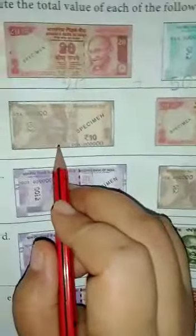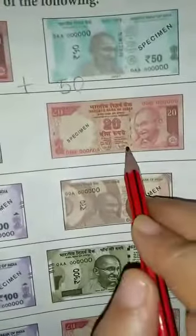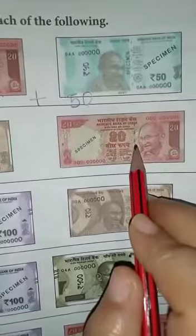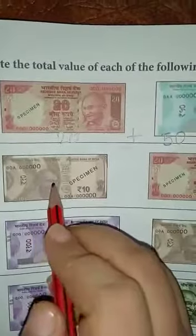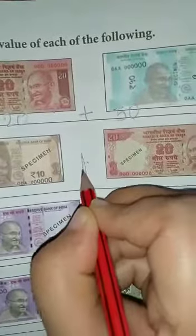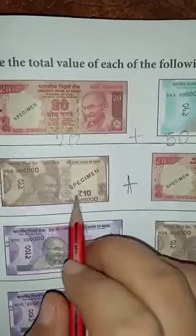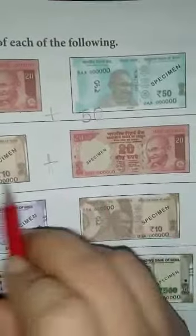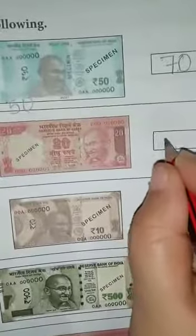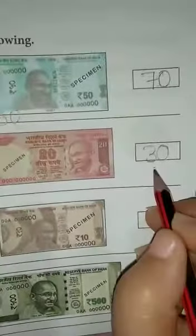Now come to the next one. This is the 10 rupees note and this is the 20 rupees note. We have to add the amounts: 10 plus 20. The total value is 30 rupees.